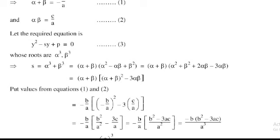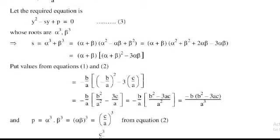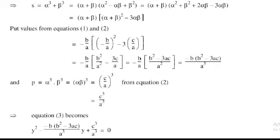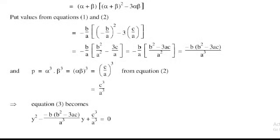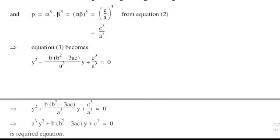The product P = alpha³·beta³ = (alpha·beta)³ = (c/a)³ = c³/a³. Substituting the values of sum and product into equation 3: y² - [-b(b² - 3ac)/a³]y + c³/a³ = 0. Multiplying through by a³: a³y² + b(b² - 3ac)y + c³ = 0, which is the required solution.